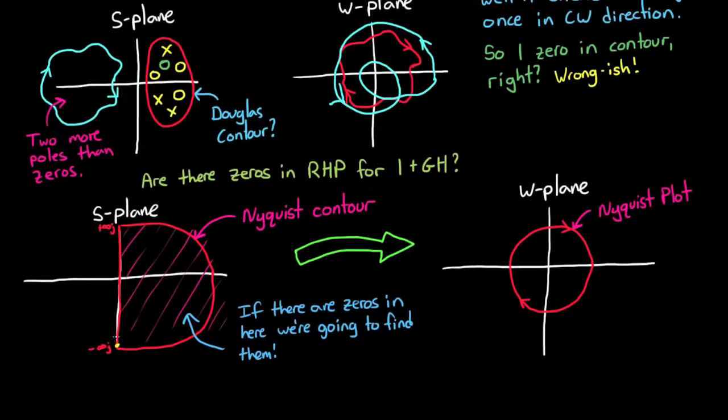And again, you get those plots by plugging in every single value along the j omega axis, and then all the points along infinity in the right half plane. This is easier to do than you might imagine, but I'm going to cover that in the next video. For now, we'll rely on the computing power of MATLAB to generate those plots for us.